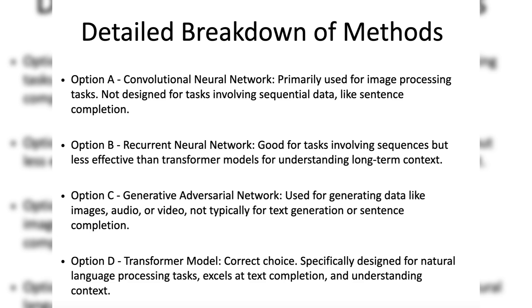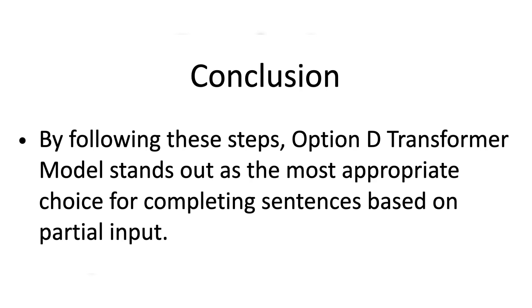Option D, transformer model, is correct because transformer models such as GPT (generative pre-trained transformer) are specifically designed for tasks involving natural language processing (NLP), including text completion, translation, summarization, and more. They excel at understanding context and generating coherent text based on partial input, making them the ideal choice for sentence completion tasks. By following these steps, Option D, transformer model, stands out as the most appropriate choice for completing sentences based on partial input.